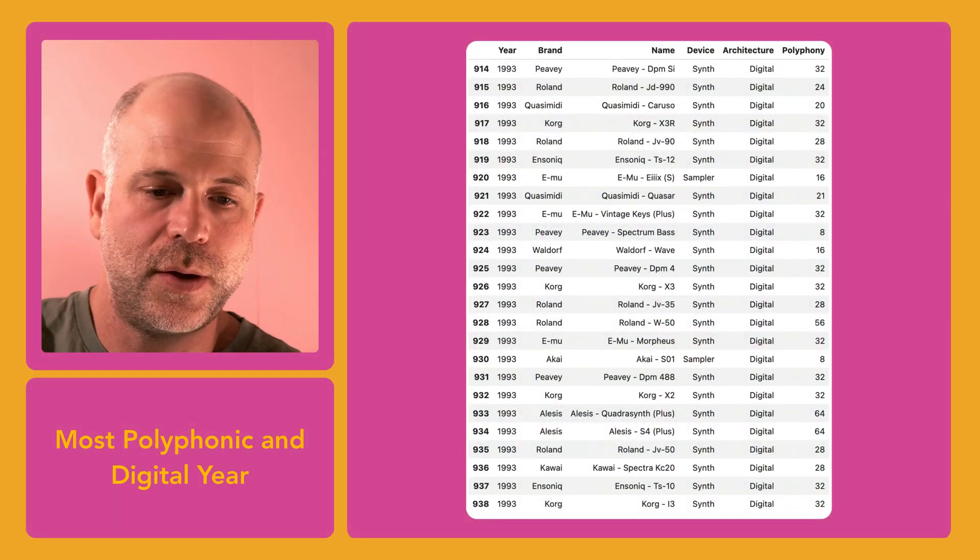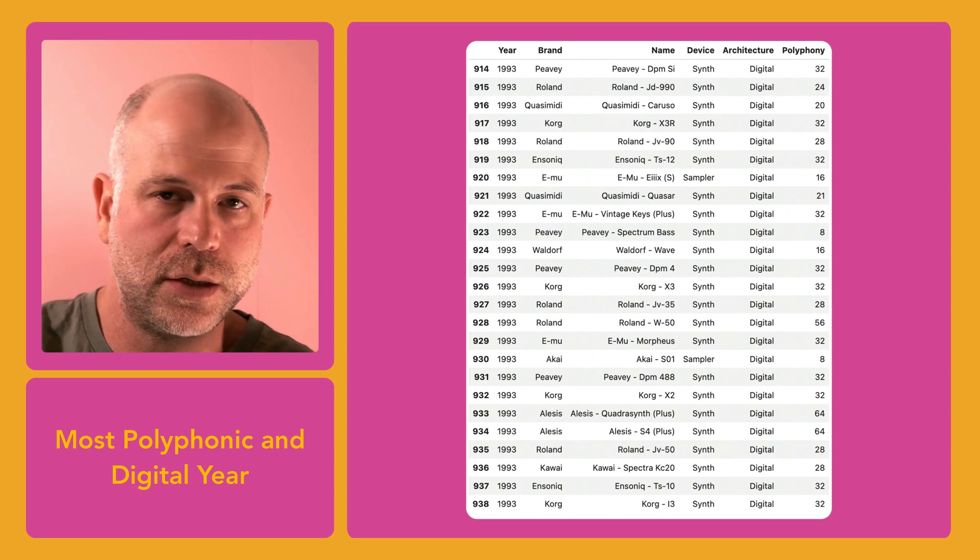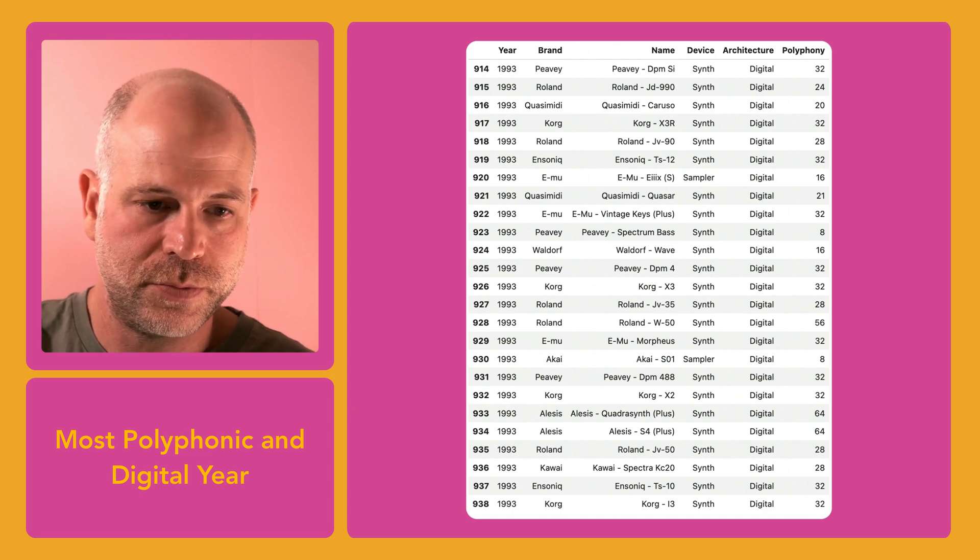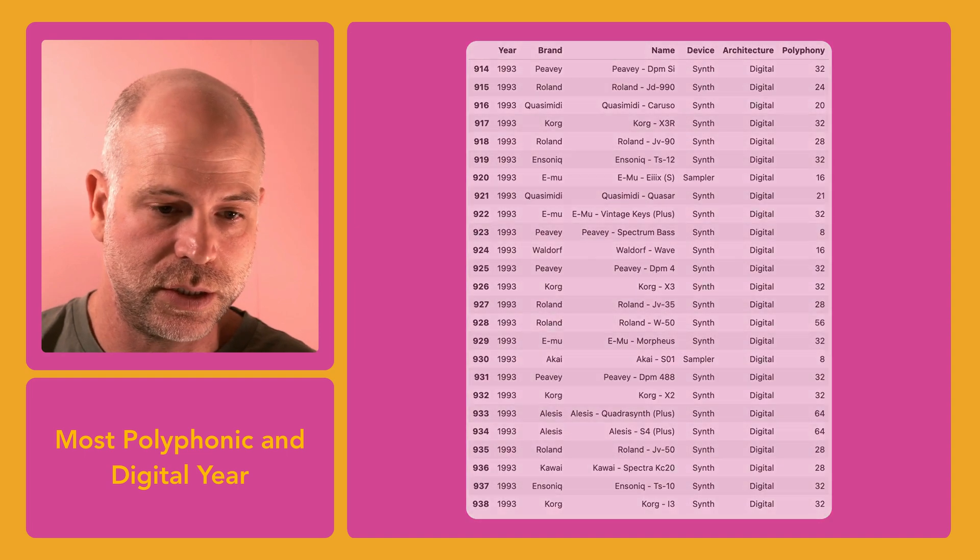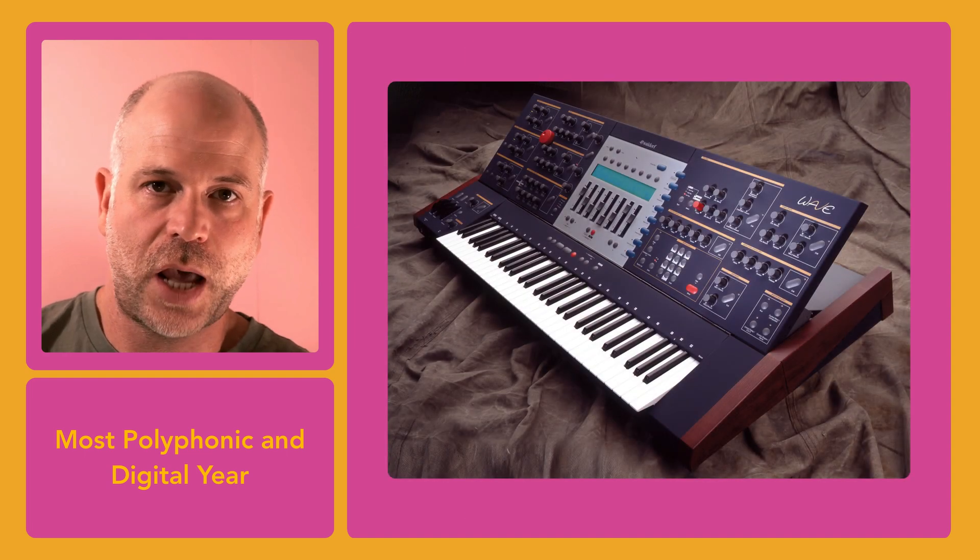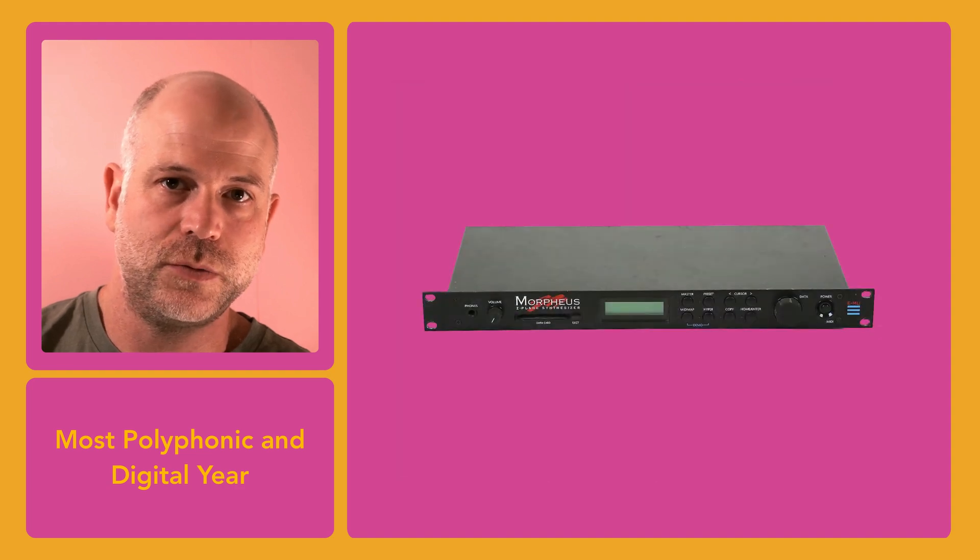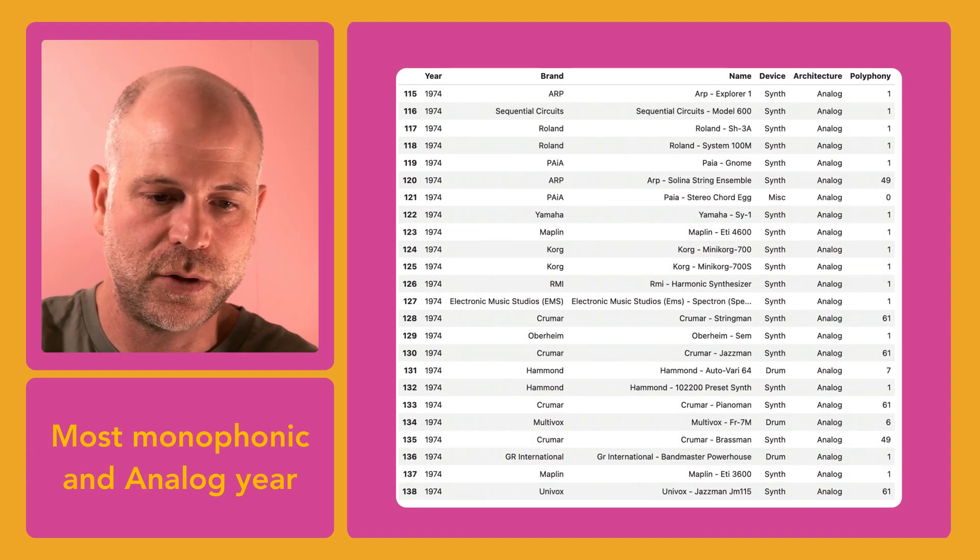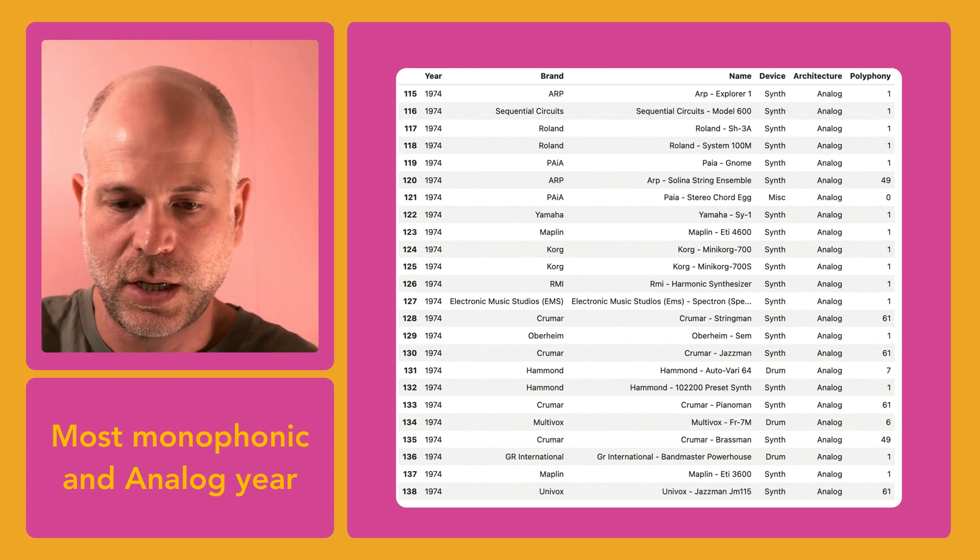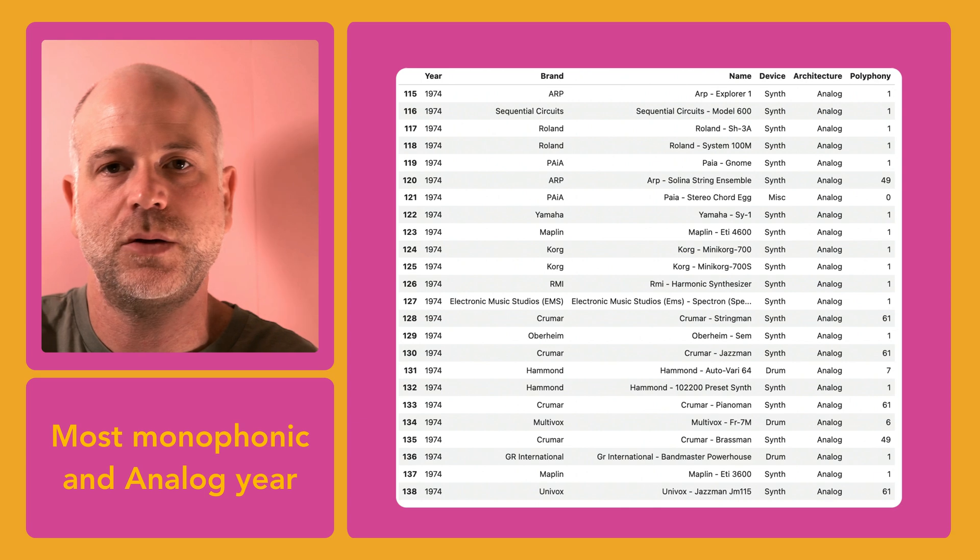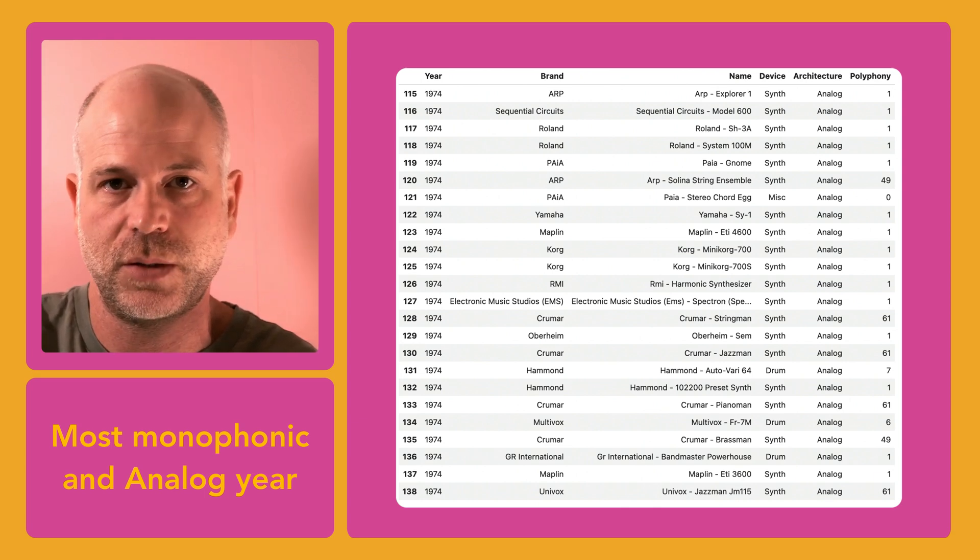As I mentioned before, I discovered that in 1993, zero analog synths were released, which made it the most polyphonic and digital year in the synth history, that I'm aware of at least. Some significant models I would name as the Waldorf Wave and the EMU Morpheus. After this I also wanted to explore the year with the highest percentage of analog and monophonic synths, which turned out to be 1974, with 100% of the releases being analog and 62.5% of the releases being monophonic. And some notable synths you probably heard of are the Oberheim SEM and the Roland System 100M.